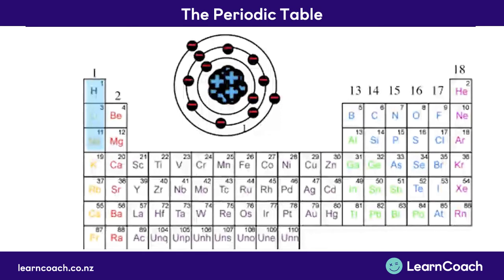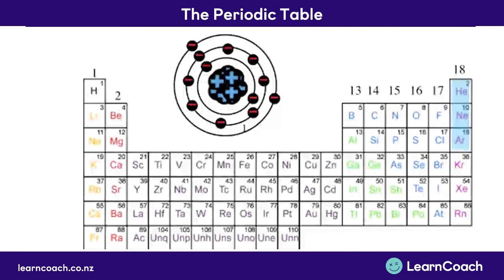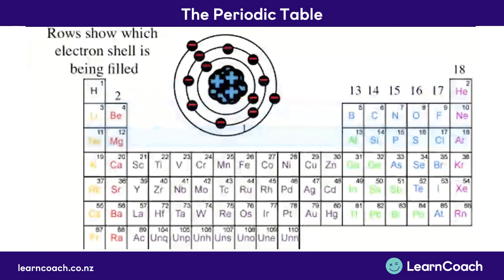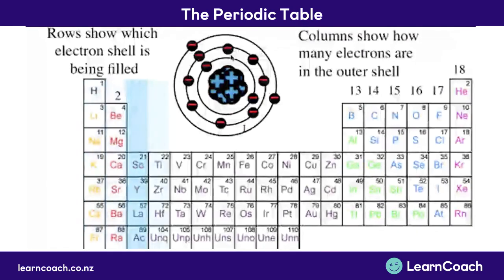The first column means one electron is in the outer shell; the second column, two. We skip this whole purple section in the middle and only worry about the groups that have been raised up. So we skip across to group 13, where there are three electrons in the outer shell, then four, five, six, seven electrons. This final column or group means there is a full outer shell. So the rows show which electron shell is being filled, and the columns or groups show how many electrons are in the outer shell.